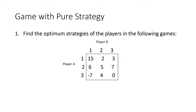This is a pure strategy game. Two players are there: Player A and Player B. Player A's strategies are A1, A2, and A3. Player B's strategies are B1, B2, and B3. The combination values are 15, 2, 3, 6, 5, 7, -7, 4, 0. We are asked to find the optimum strategies.